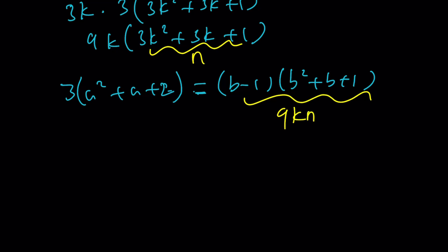So this product right here is just going to be 3kn if you divide both sides by 3, right? So we got a² + a + 2 = 3 × an integer × another integer, which is also an integer. In other words, you want this to be a multiple of 3. But guess what? That's not possible.